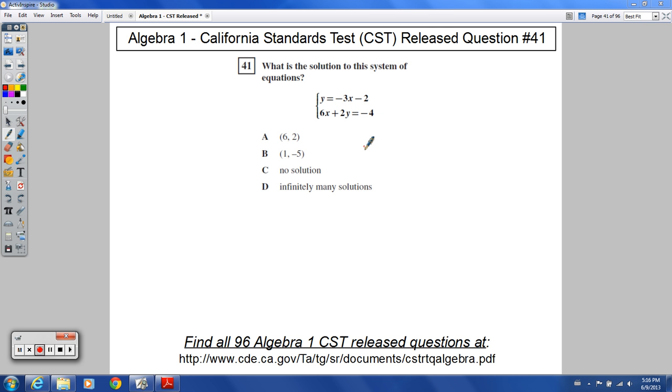We could do this graphically. We could draw these lines on a graph, see where they intersect, if in fact they do, and find the solution from there. If they intersected, it looks like it should be one of these two points. If they didn't intersect, it would be no solution. If they were the same line, it would be infinitely many solutions.